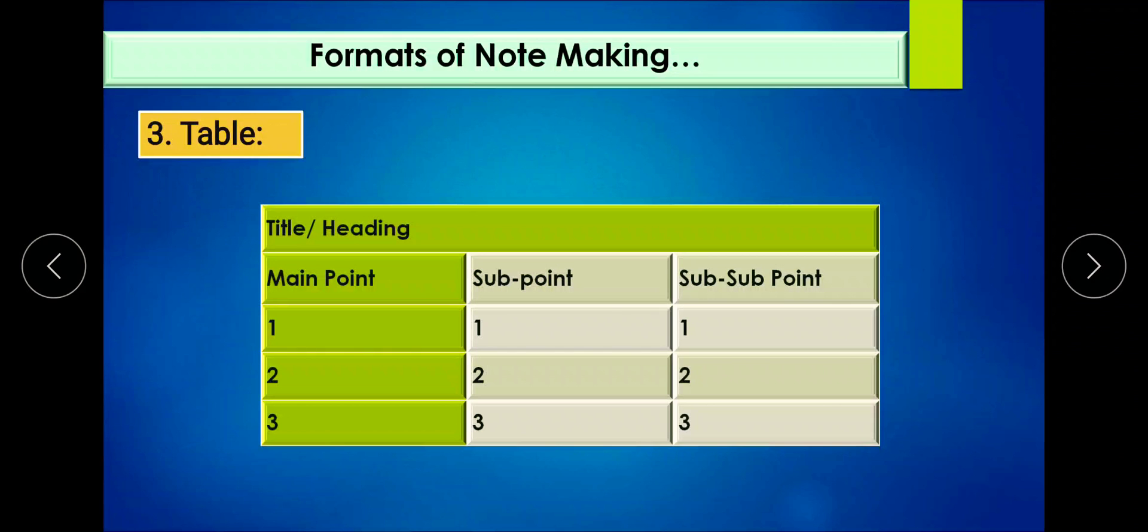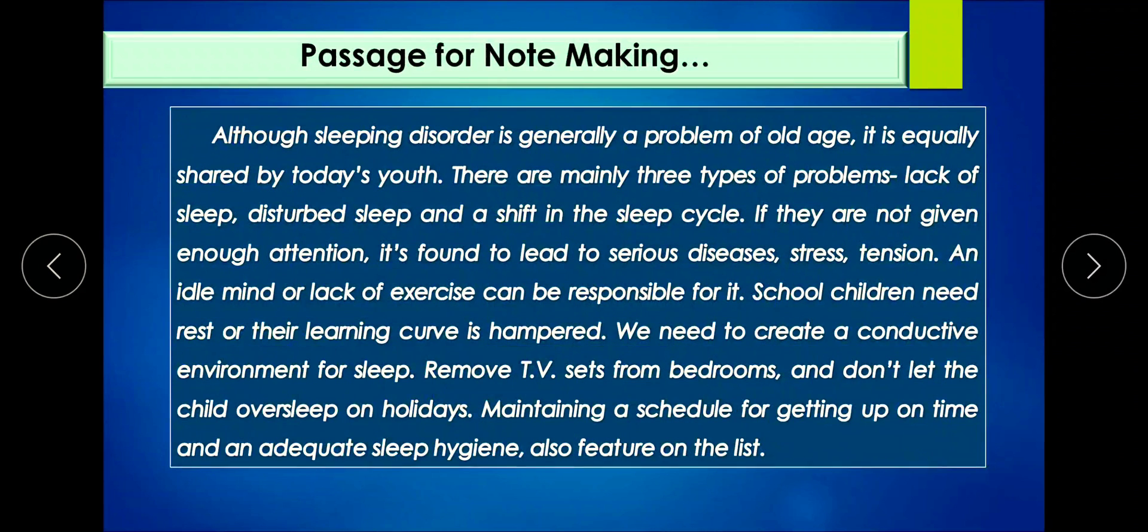Now let's solve one example. I'll read this passage for note-making. Although sleeping disorder is generally a problem of old age, it is equally shared by today's youth. There are mainly three types of problems: lack of sleep, disturbed sleep, and shift in the sleep cycle.